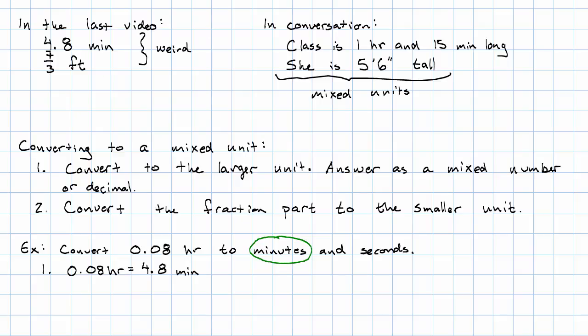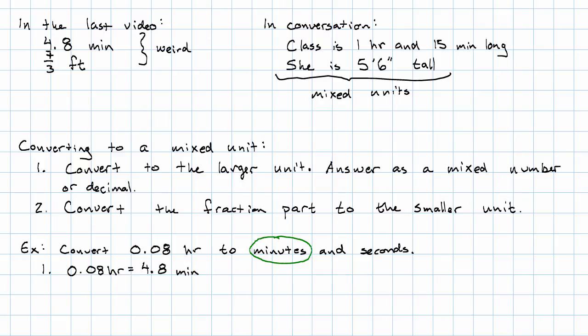Step 2, we'll take just the fraction part and convert it to seconds. In this case, the fraction part is the part after the decimal point, so we've got 0.8 minutes. And now we want to use a conversion factor that will get rid of minutes and bring in seconds. Minutes in the denominator to get rid of minutes in the numerator. We happen to know that 1 minute is 60 seconds.